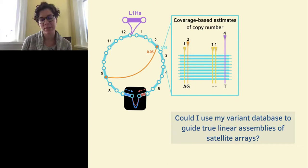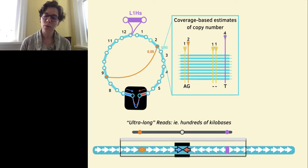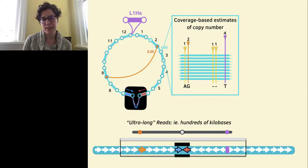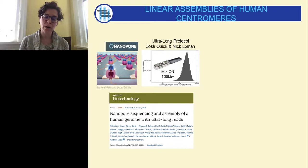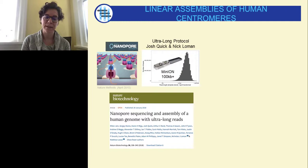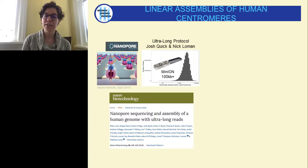Can this comprehensive study of satellite repeat sequences and variants guide true linear assemblies of satellite arrays? One approach uses ultra-long reads produced by the nanopore sequencing platform, capable of reaching hundreds of kilobases in length. I was part of a talented team that published the first nanopore sequencing of a human genome back in 2018, when Josh Quick and Nick Loman released their ultra-long protocol on the MinION, showing you could reach N50s of 100 kilobases in length, enabling study of previously unassembled repetitive regions.